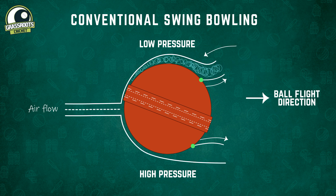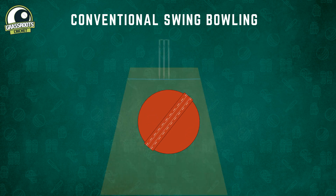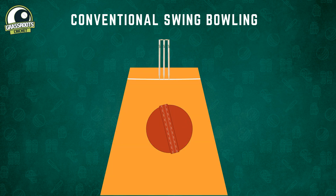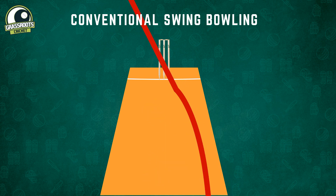The later the boundary separation, the higher the fluid velocity when the boundary layer detaches and therefore the lower the pressure. The net force caused by a pressure difference acts towards the lower pressure region. Therefore, in conventional swing, the ball laterally moves in the same direction as its seam position. For a shiny new ball, pacers angle the seam of the ball to the direction of the delivery which trips the laminar boundary into turbulence. The other side of the ball retains its laminar boundary layer, which leads to the sideways motion.